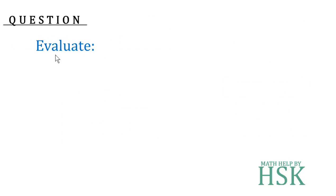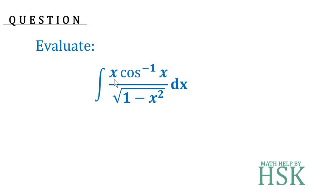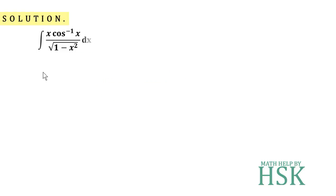The question is to evaluate the integral of x·cos⁻¹(x) divided by the square root of 1 minus x² with respect to x. On observing this integral, we see that it contains three terms: one is x, second is cos⁻¹(x), and third is the term in the denominator, that is the square root of 1 minus x².